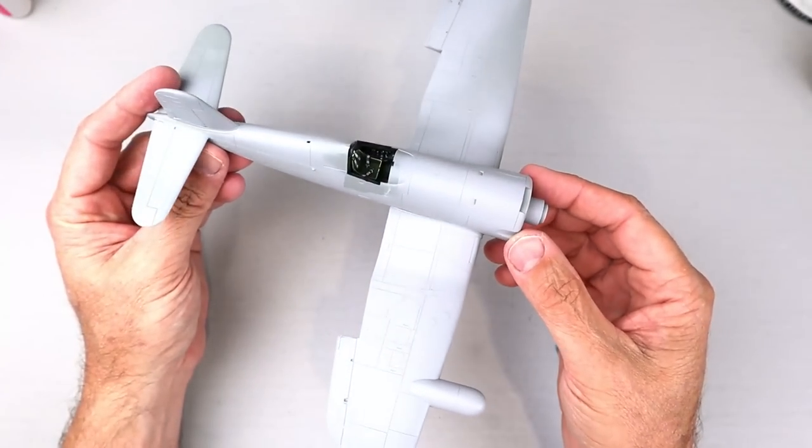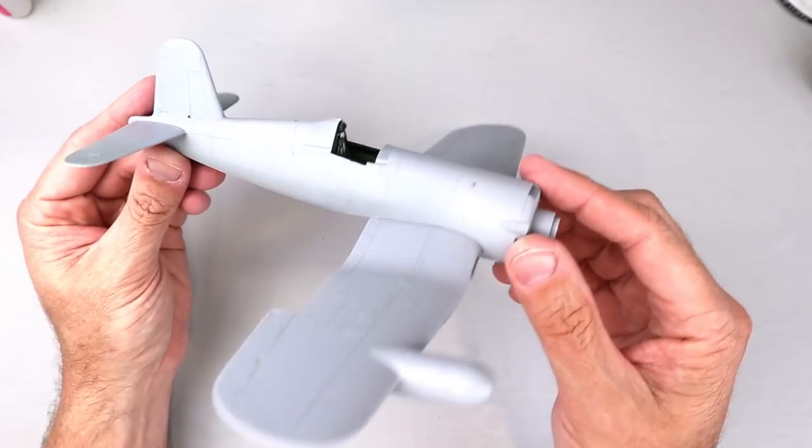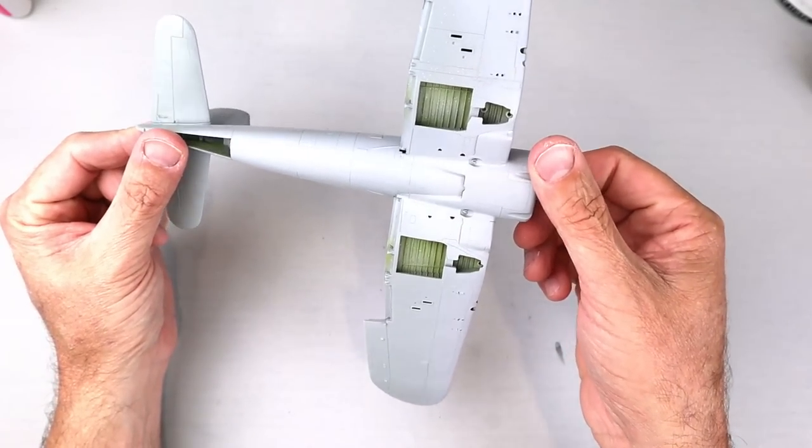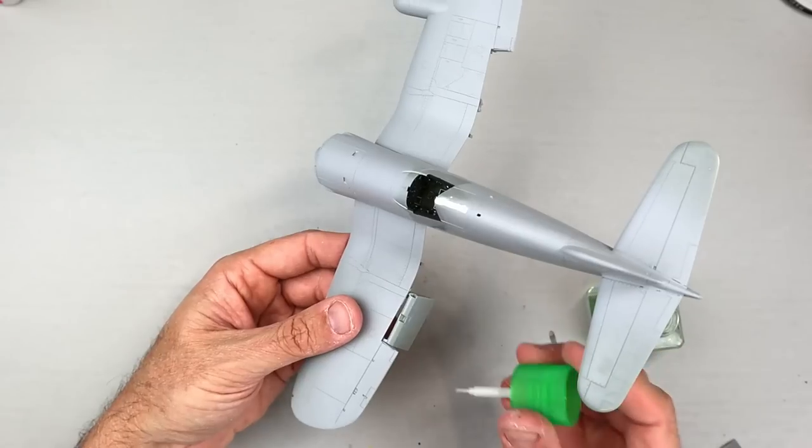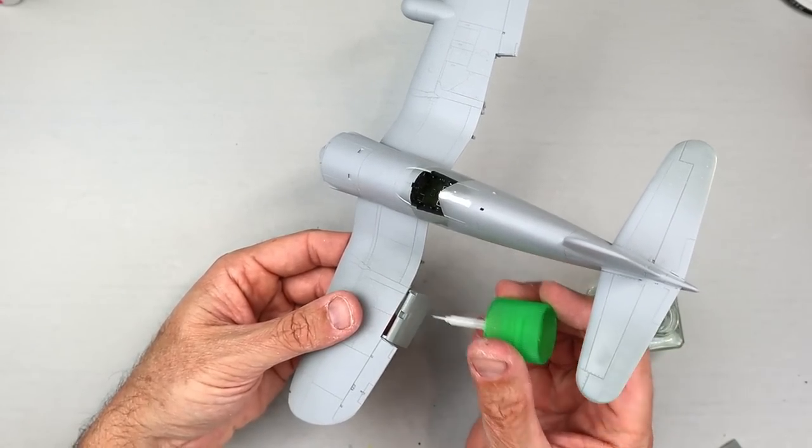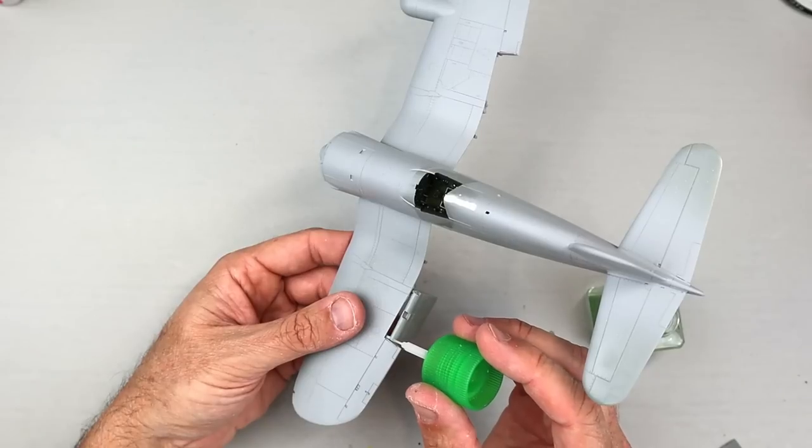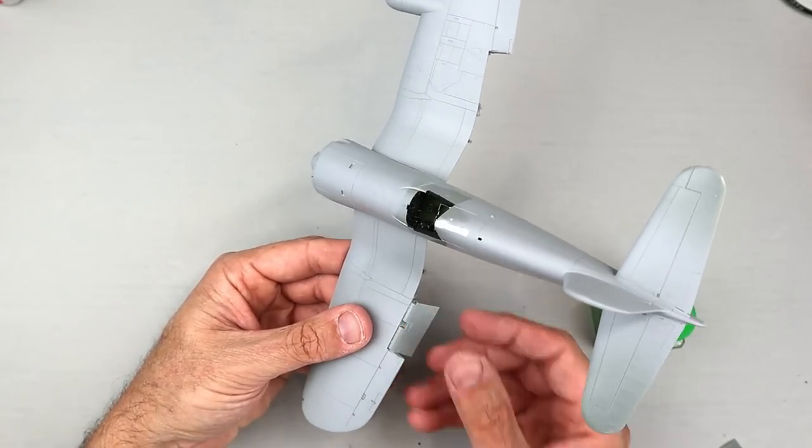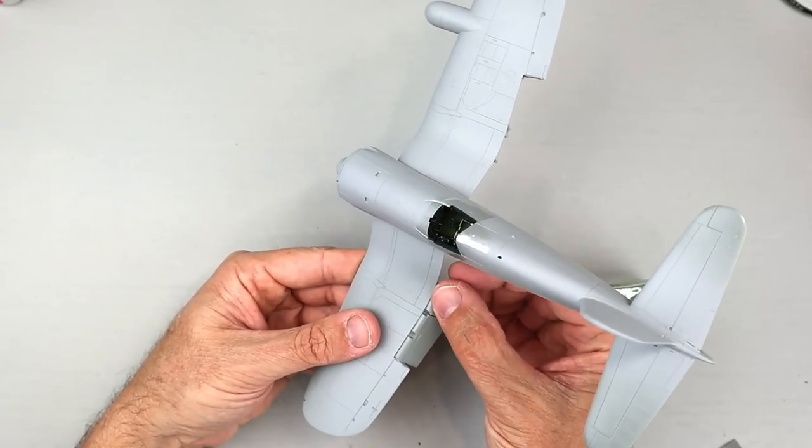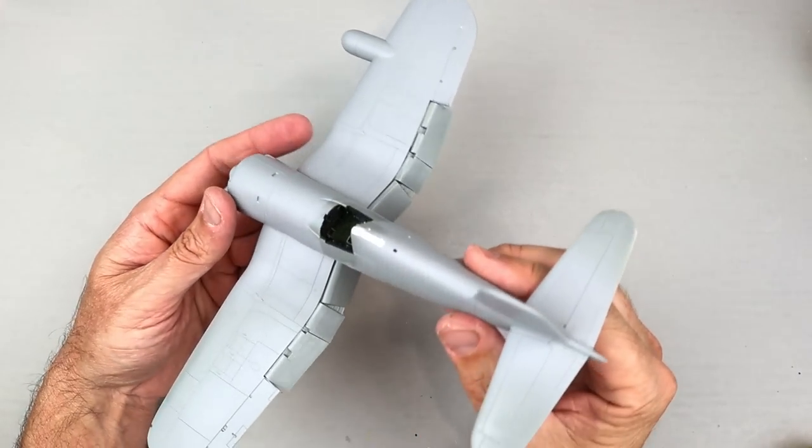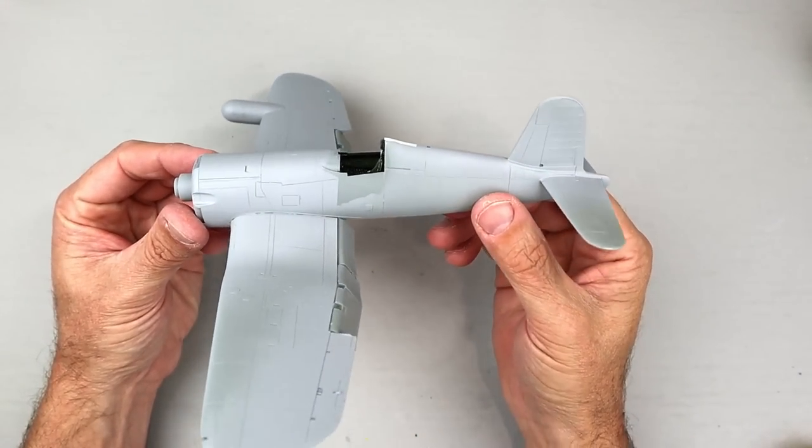I also sanded all of the other seams on the fuselage and wings in preparation for painting. I used Tamiya's fine surface primer to prime the model and to make sure that all of the seams had been filled satisfactorily. I installed each of the six individual flap sections once again using Tamiya thin cement. Here's how it looked headed into the painting stage.